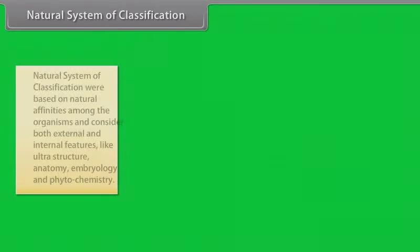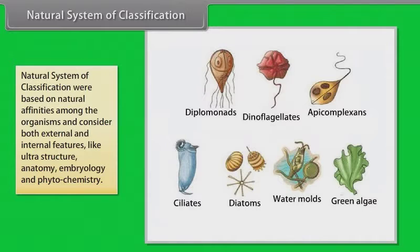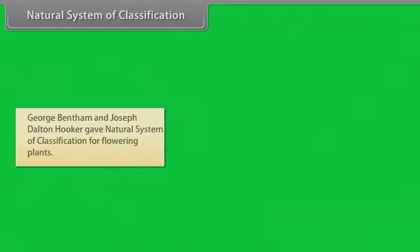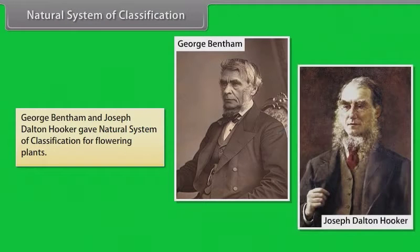Natural system of classification. Natural system of classification were based on natural affinities among the organisms and consider both external and internal features like ultra structure, anatomy, embryology and phytochemistry. George Bentham and Joseph Dalton Hooker gave natural system of classification for flowering plants.